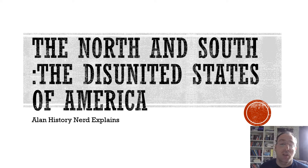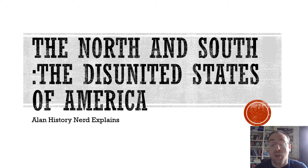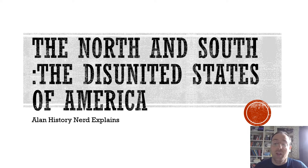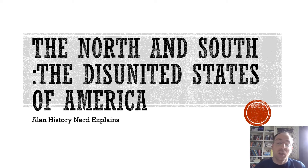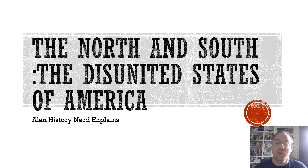Hello everybody. In this video I'm going to give you some information about the northern and southern states in America in the mid-19th century to help you make the decision whether this is really the disunited states of America. So ultimately there's going to be a civil war, but could you really have seen this coming? If you go back 20 or so years and look at the 1840s, would you have seen such differences between the north and the south that some kind of schism or divide was inevitable?